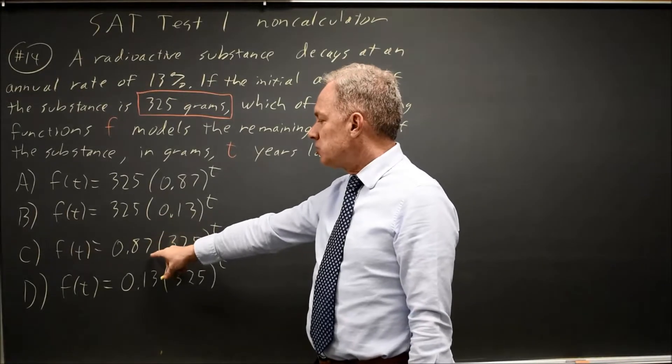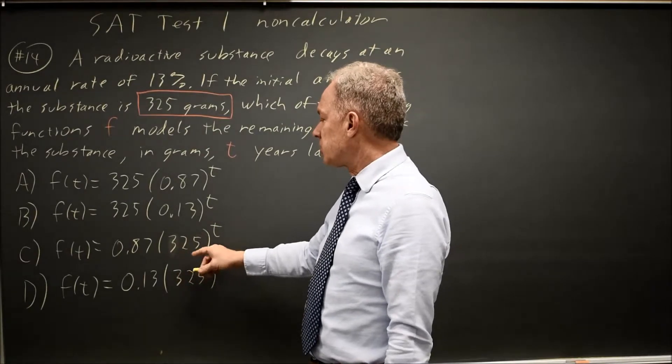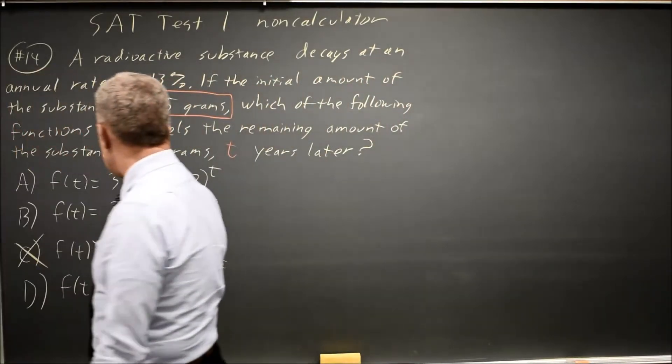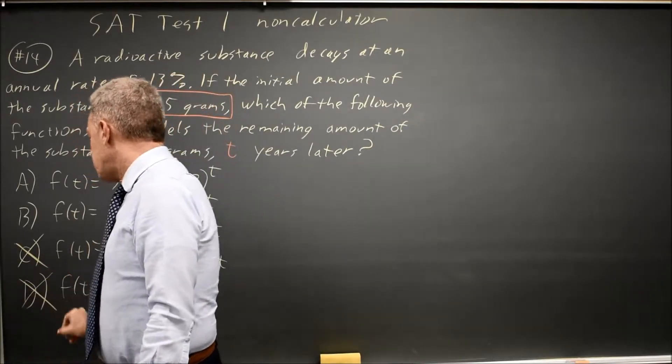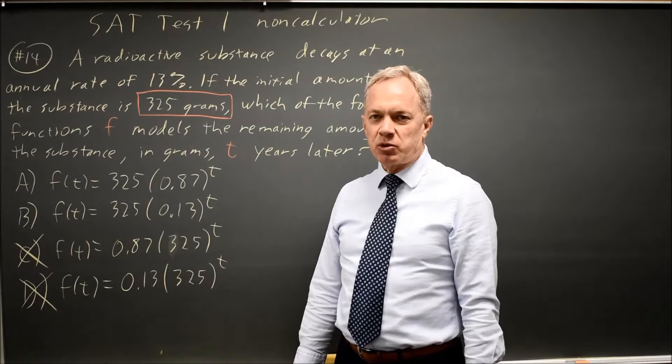Same with B. Choice C gives you 0.87 times 325 to the 0, which is 0.87 times 1, which is 0.87, which is not our starting amount, so that's wrong. And the same for D, which gives us 0.13 times a number to the 0, so that's 0.13.